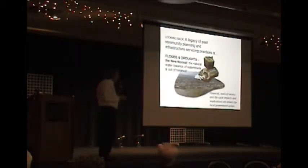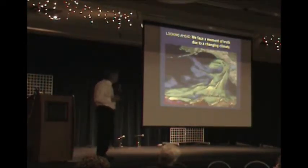As we look back, what you heard a lot about yesterday was the legacy of past community planning and infrastructure services and practices. What are we seeing? Floods and droughts. That's the new normal. Really what it comes down to is the natural balance of watersheds is out of balance. Bob did such a great job of providing that global perspective of why the global water balance is out of balance. If the global water balance is out of balance, then certainly the Comox Valley water balance is out of balance.